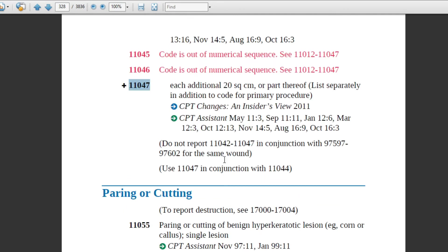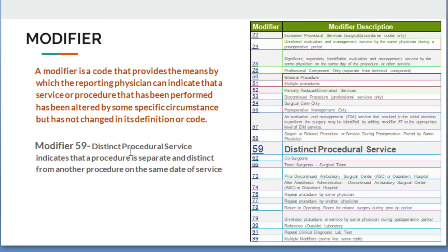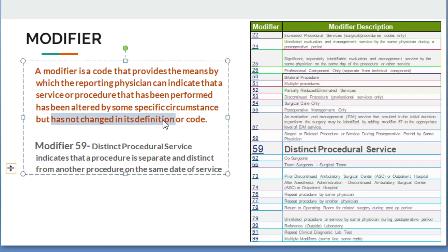Now, what is a modifier? A modifier is a code that provides the means by which the reporting physician can indicate that a service or procedure performed has been altered by some specific circumstance, but has not changed in its definition or code. The code description remains the same; the definition of the code remains unchanged.